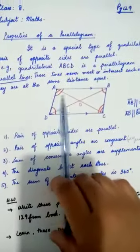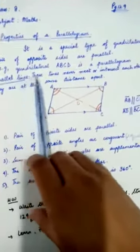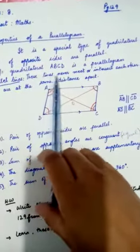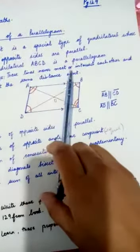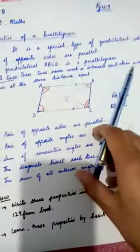If you look at the parallel sides, you should know what parallel lines are. Parallel lines are those lines that never meet or intersect each other and are at the same distance apart.